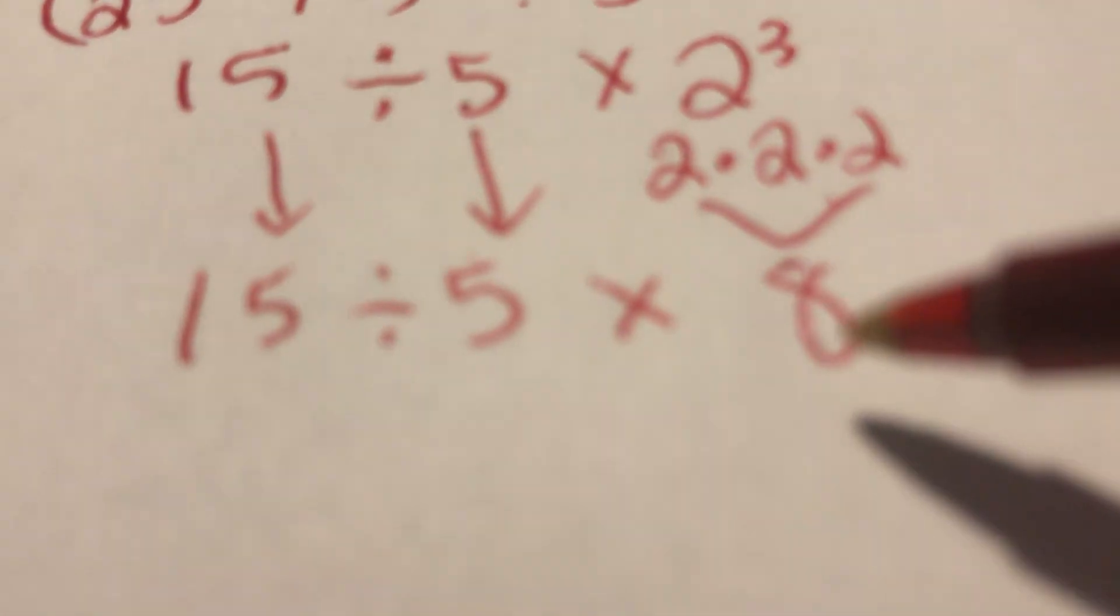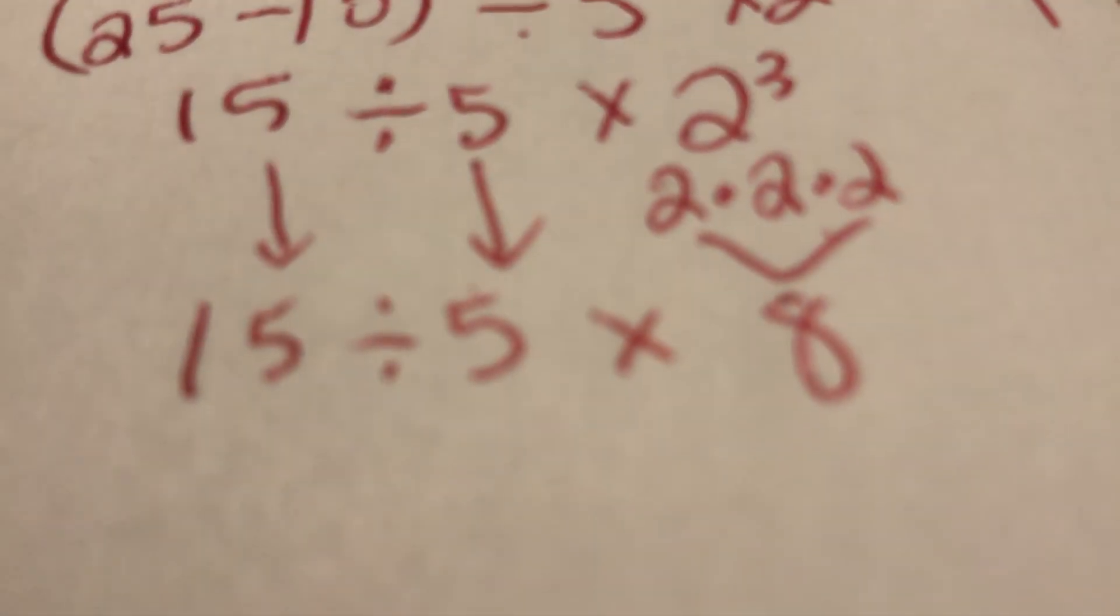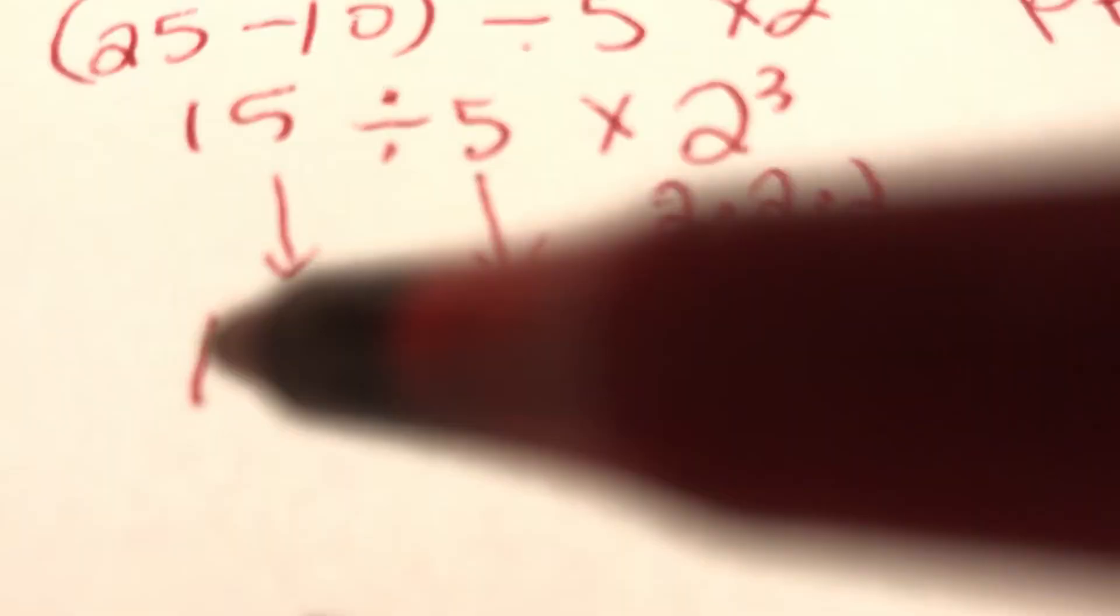So coming over here, if you said, well, multiplication first, we're going to divide 15 by 40. No, it is not going to be multiplication first. It is division first.